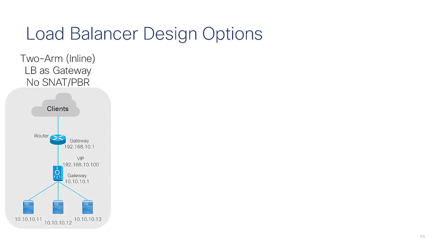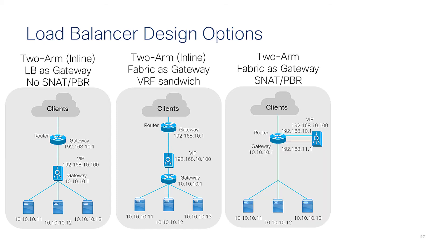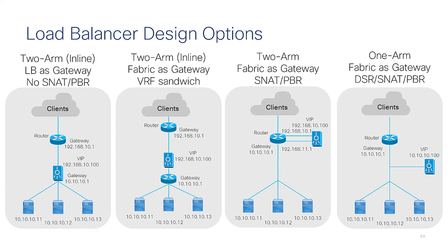Let's take a look at the load balancer design options. The classic is the two-arm design where the load balancer is the default gateway. Another option is the two-arm inline, where the load balancer is in the path between two VRFs. Then there are one-arm and two-arm modes where the fabric is the default gateway. In one-arm mode, besides using source NAT and PBR mode, you could also use direct server return to send traffic directly from the servers to the client, bypassing the load balancer.